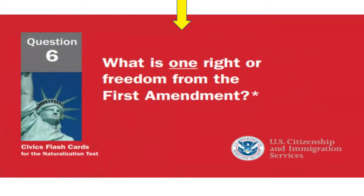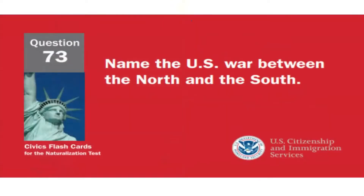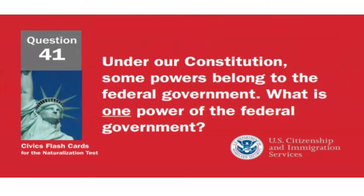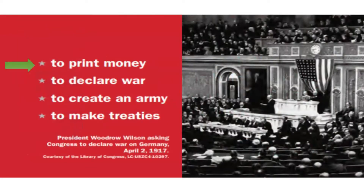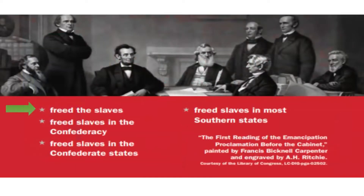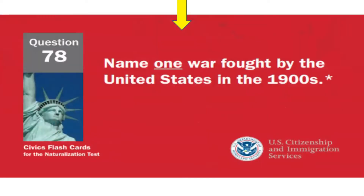Name one war fought by the United States in the 1800s. The Civil War. What is one right or freedom from the First Amendment? Speech. Name the U.S. war between the North and the South. The Civil War. Under our Constitution, some powers belong to the federal government — what is one power of the federal government? To print money. What did the Emancipation Proclamation do? Freed the slaves.